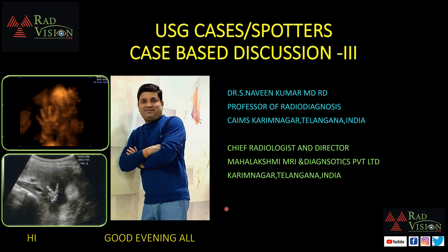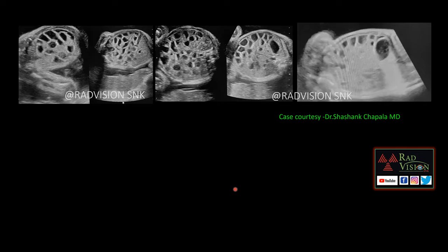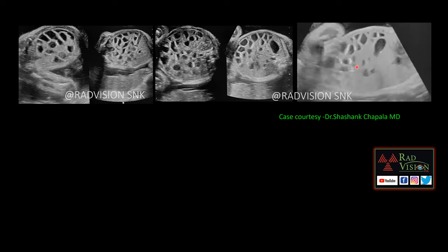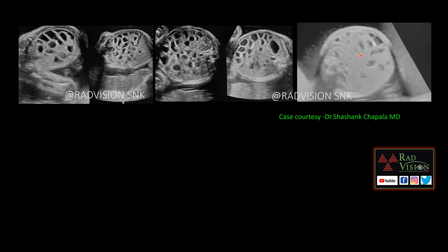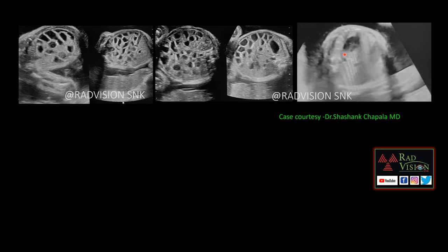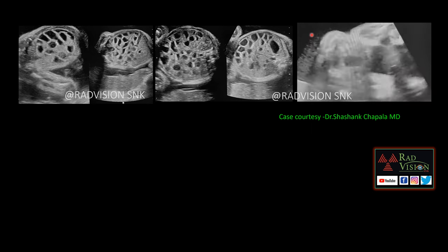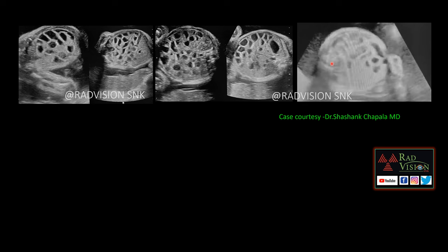New session: ultrasound cases, spotters and case-based discussion, Set 3. Here you can see a fetus where all the bowel loops — both small and large — are dilated, with associated polyhydramnios. In this video you can see both small and large bowel loops are dilated, with normal peristalsis within the bowel loops and polyhydramnios.